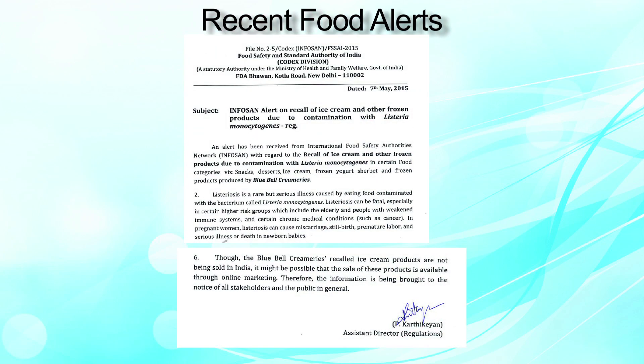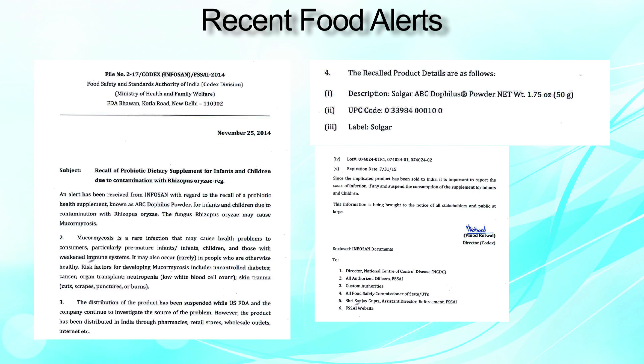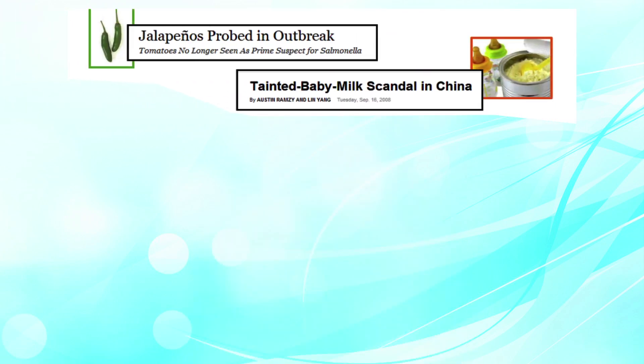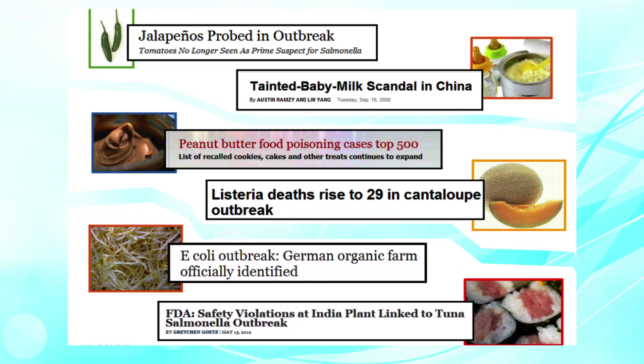One food alert concerns the recall of ice cream and other frozen products due to contamination with Listeria, issued on 7th May 2015. There is also another food alert dated 25th November 2014. Each alert has a purpose, description and product name. Globally, you may have read through various news articles, newspapers and TV media about food safety issues — tainted baby milk in China, Listeria contamination outbreak in Canada, E. coli outbreak in Germany, and food safety violations in India due to fish contaminated with Salmonella. It is very important to make consumers and state food authorities alert about these happenings.